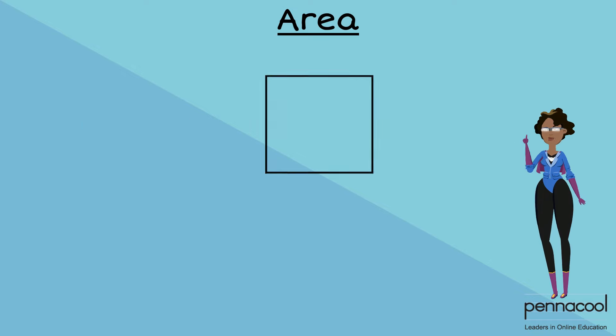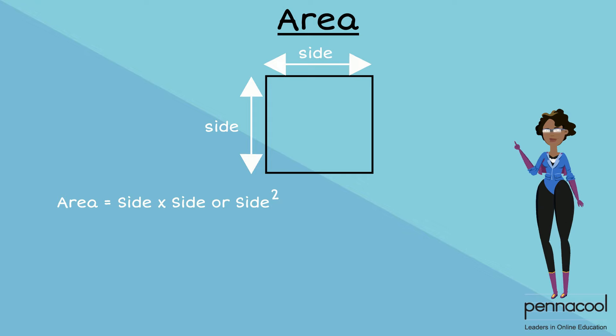We can do the same with squares, but take note that the length and the breadth of squares are the same. All sides of a square are of equal length. This makes the area formula side by side or side squared. For example, if we have a square with sides of length 9 meters, to find its area, we multiply side by side. This gives us 9 meters multiplied by 9 meters, which equals 81 meters squared.